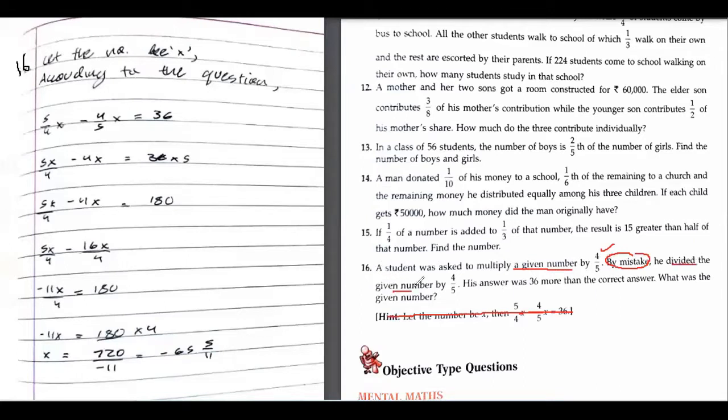His answer was 36 more than the correct answer. What was the given number? Interesting question. So you let the number be x according to the question. Why are you subtracting these two numbers? Can you explain your procedure? I just followed the statement.